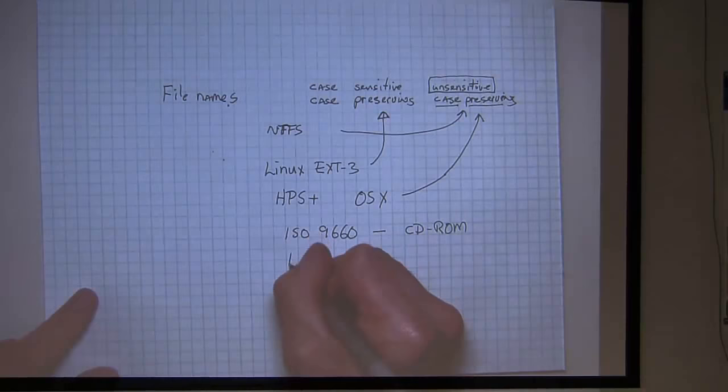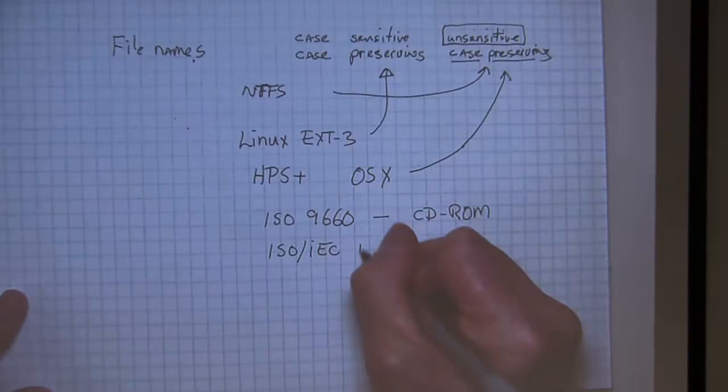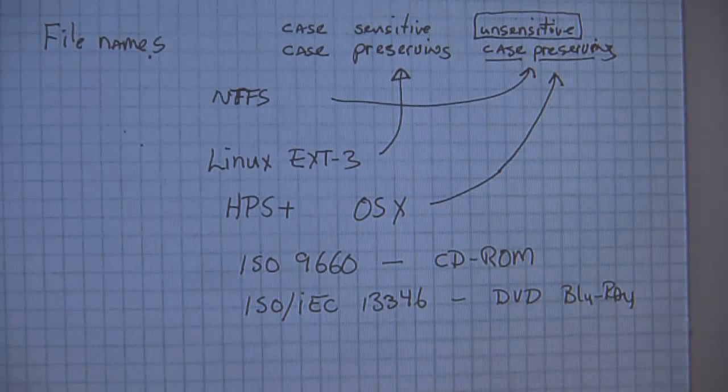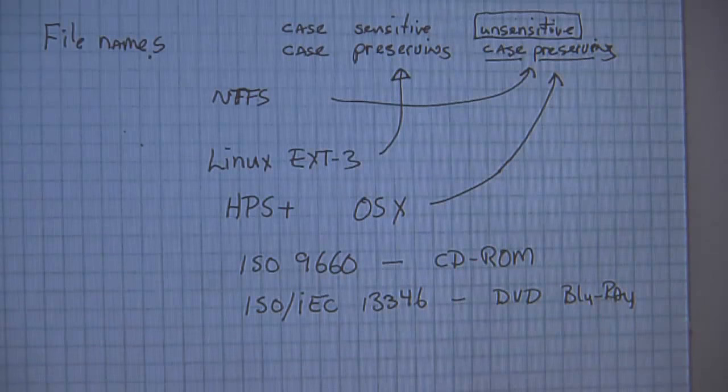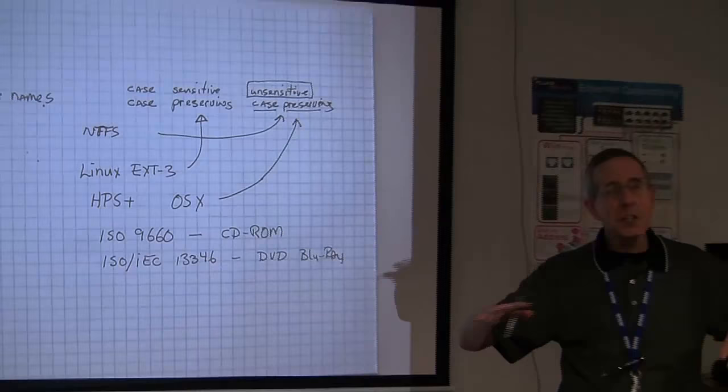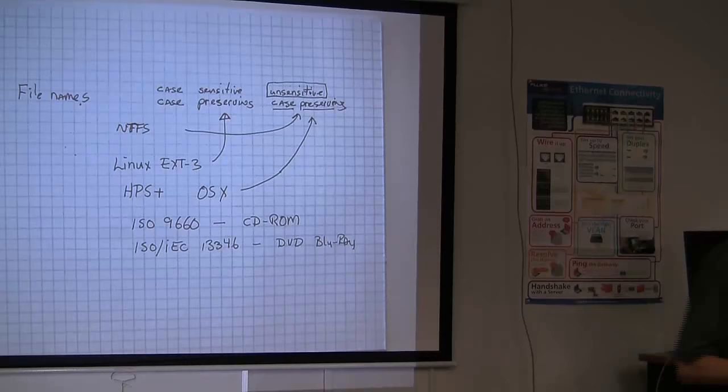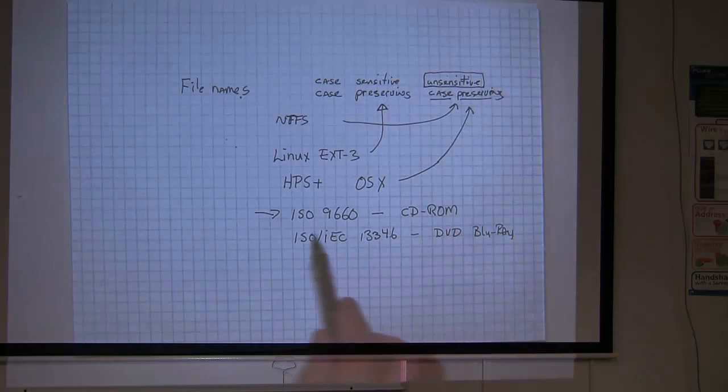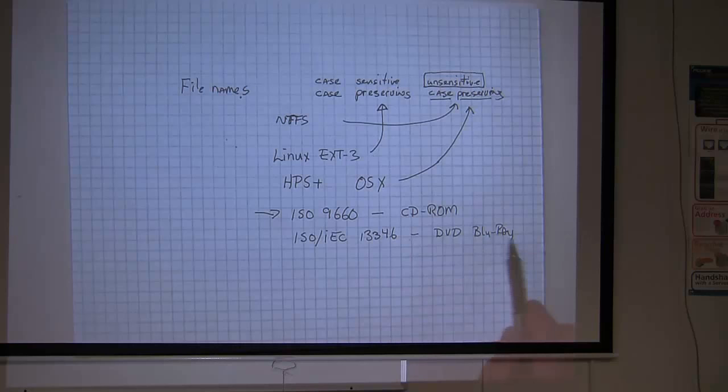One more. It's called ISO-IEC-13346. This is the file system for DVDs and Blu-rays, which you all love now. So now we're using a file system for Blu-rays and DVDs. This is the file system that allows us to format the disk, put data on it, not movies, data on it. So this is the file system that we use for CD-ROMs and this is the file system that we use for DVDs and Blu-rays.